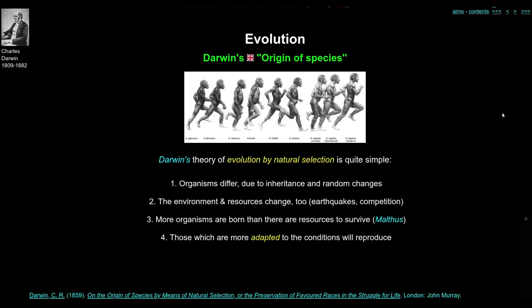In 1859, after nearly 30 years of research, collecting and categorising and studying the tiniest things from beetles all the way up to giant tortoises, Darwin published his theory. His theory of evolution by natural selection is really quite simple.